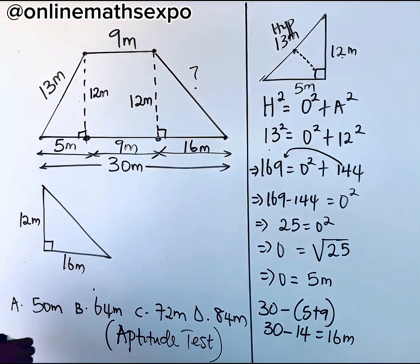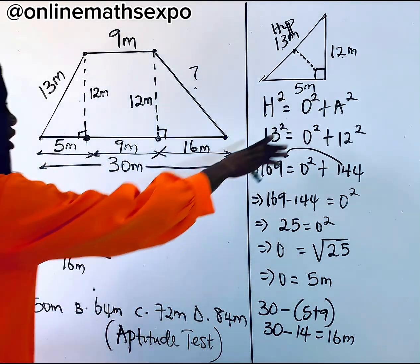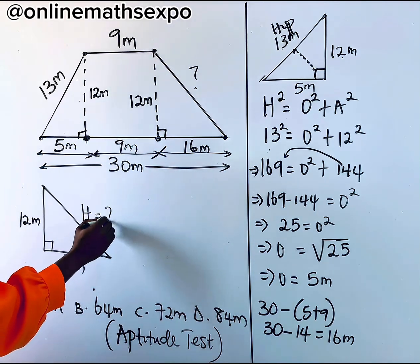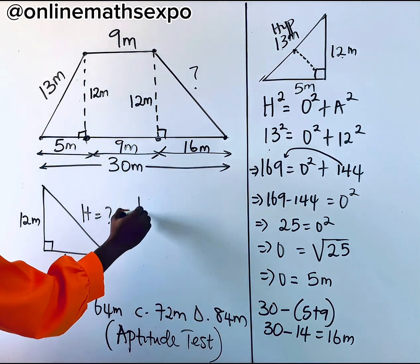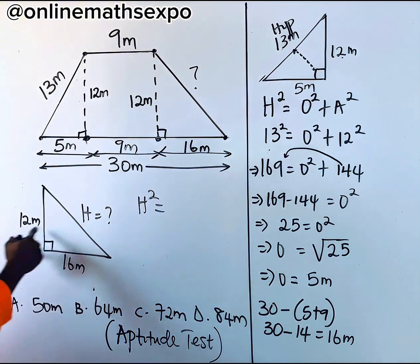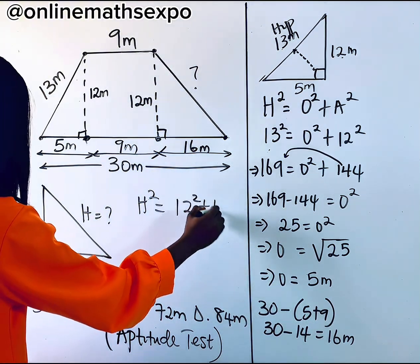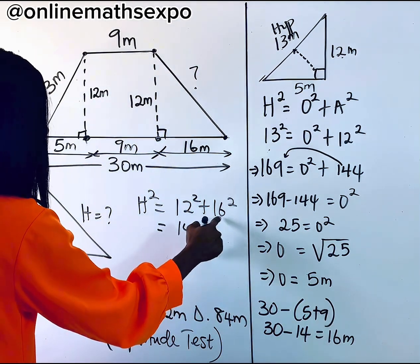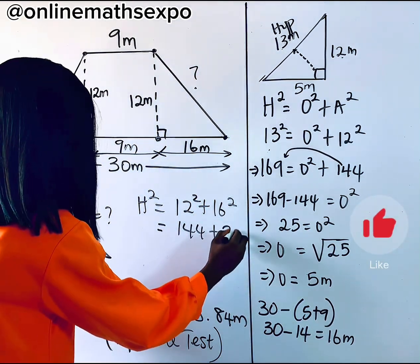So what do you do? You are going to have it that using the same Pythagorean theorem, this is the part we are looking for. And that is the hypotenuse. So we're going to have h squared is 12 squared plus 16 squared. And that will give you 144 plus 16 squared gives you 256.